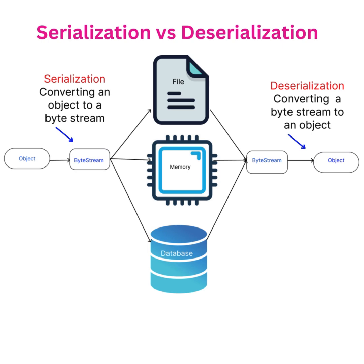Serialization versus deserialization. Converting an object to a byte stream is a key aspect of serialization, where converting a byte stream back to an object is the process of deserialization.